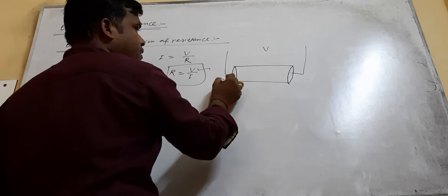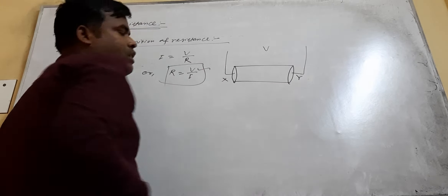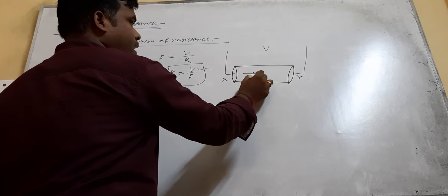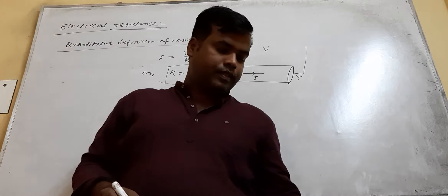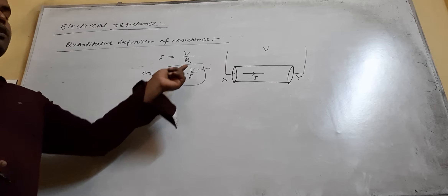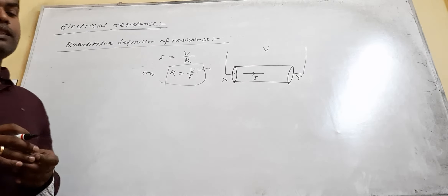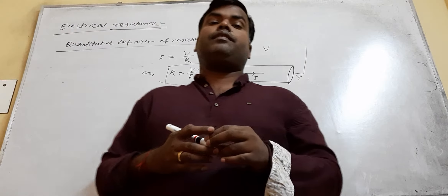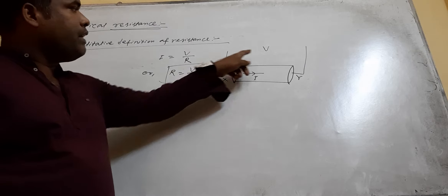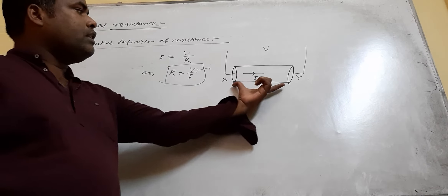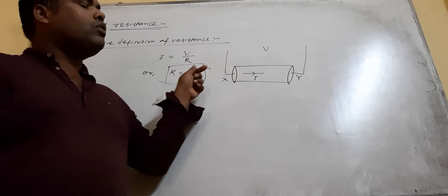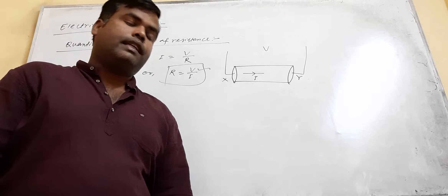Suppose it is the conductor. The potential difference across the conductor is V, and I is the current flowing through the conductor. The resistance R is equal to V by I. Mathematically, the resistance of a conductor is defined as the ratio of potential difference applied across the two ends of the conductor to the current flowing through it.